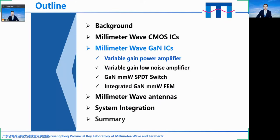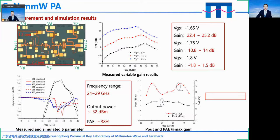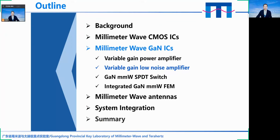Now let's move to our design of the millimeter wave GaN integrated circuit. The first component is the variable gain power amplifier. Here is the photo of the power amplifier chip. The size is 4.2 by 1.3 millimeter. The frequency range is from 24 to 29 GHz. The output power is about 32 dBm and the PAE is about 38%. When the VGS is changed from minus 1.65 to minus 1.8 volt, the gain changes from 1.8 to 25.2 dB.